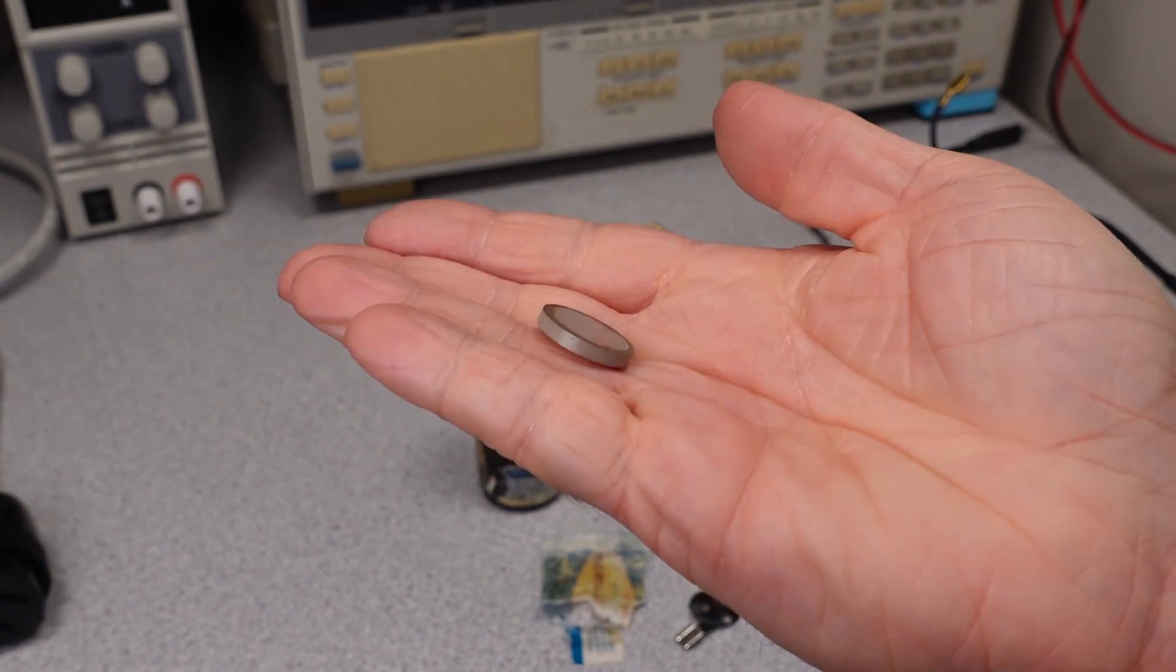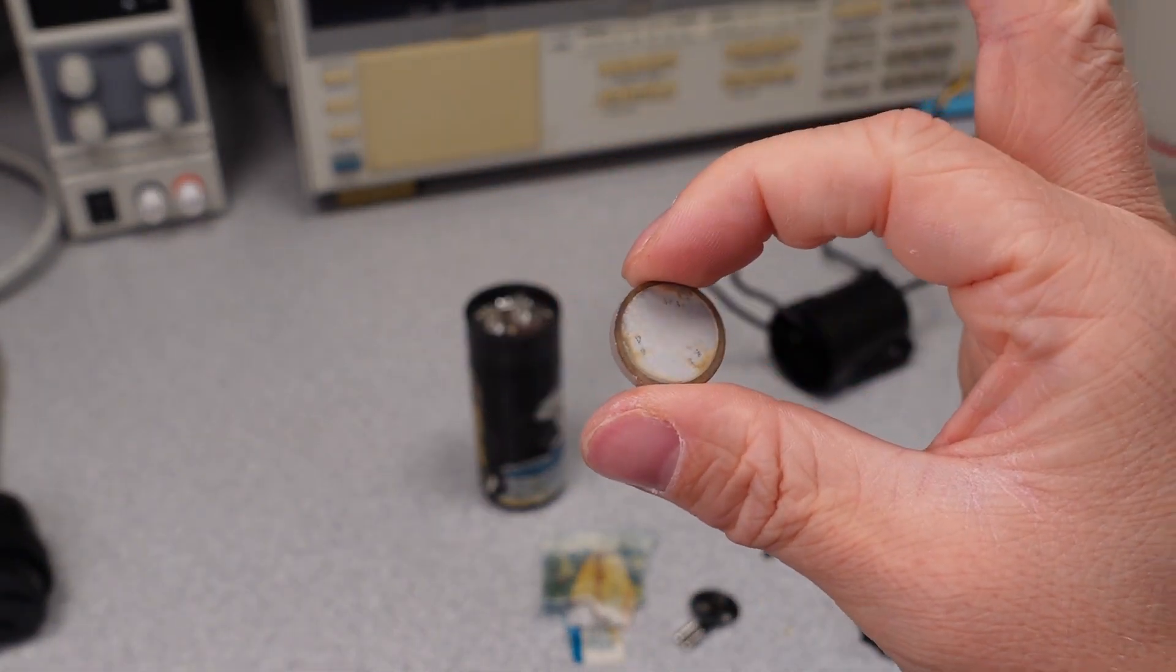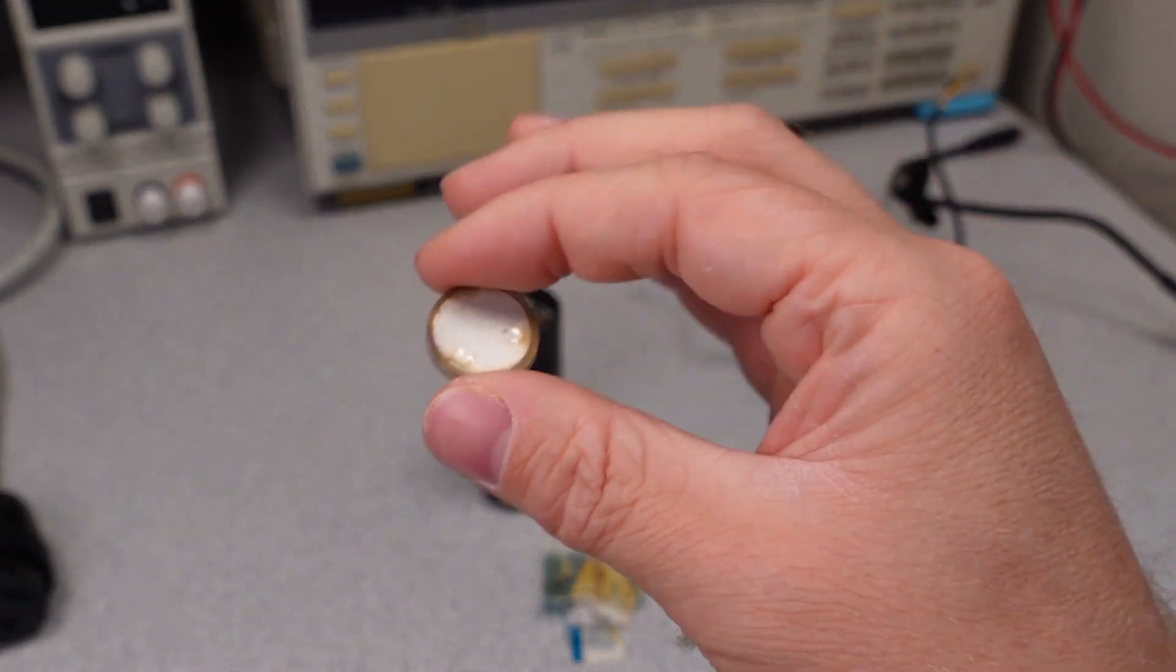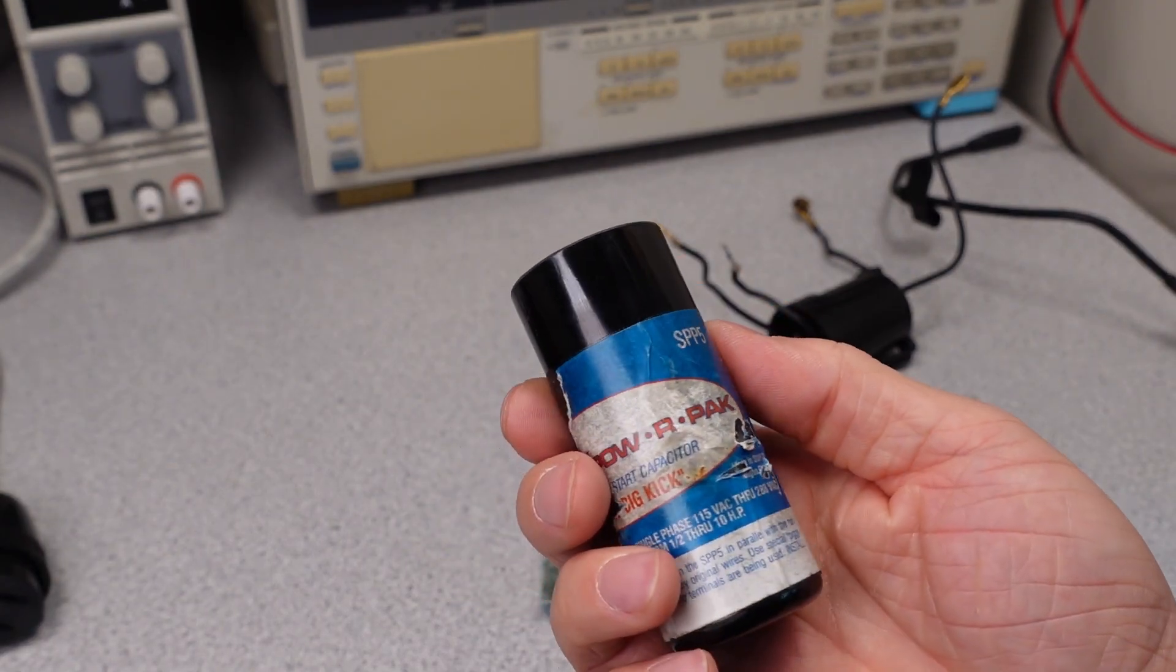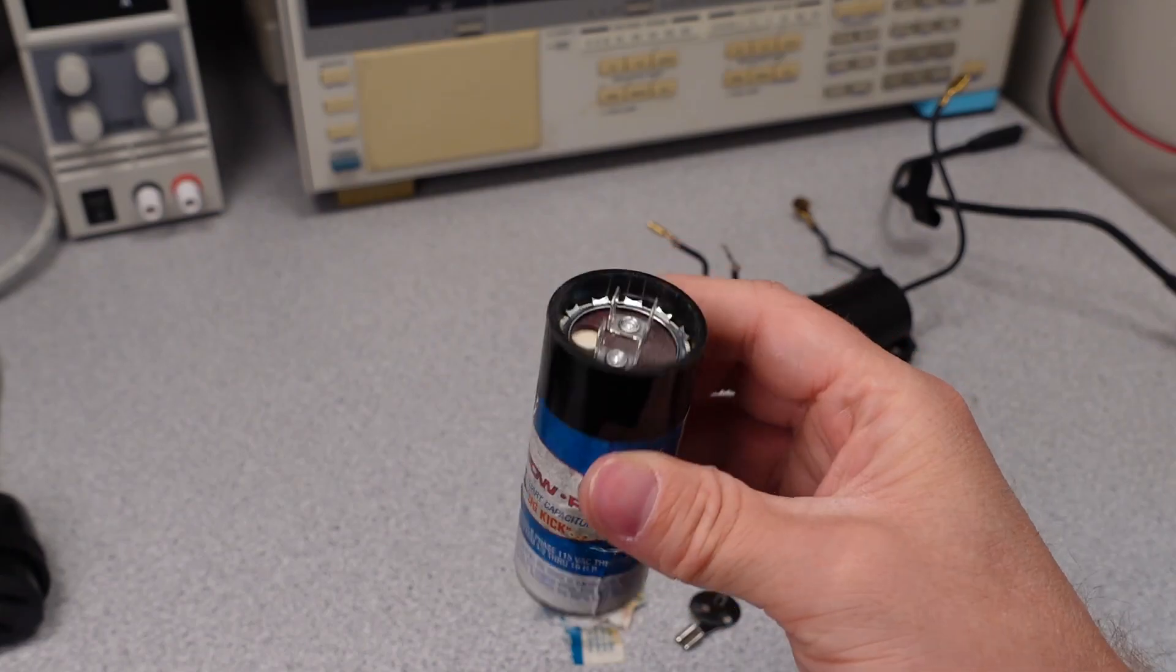So we can do some tests on this and see what happens when we try and pass some current through this thing. What we should see is it should pass a lot of current, and then all of a sudden not pass any current, and it should get hot as we do that. We'll also do some quick tests on this capacitor just to see if this thing's showing some capacitance or showing resistance or anything like that.